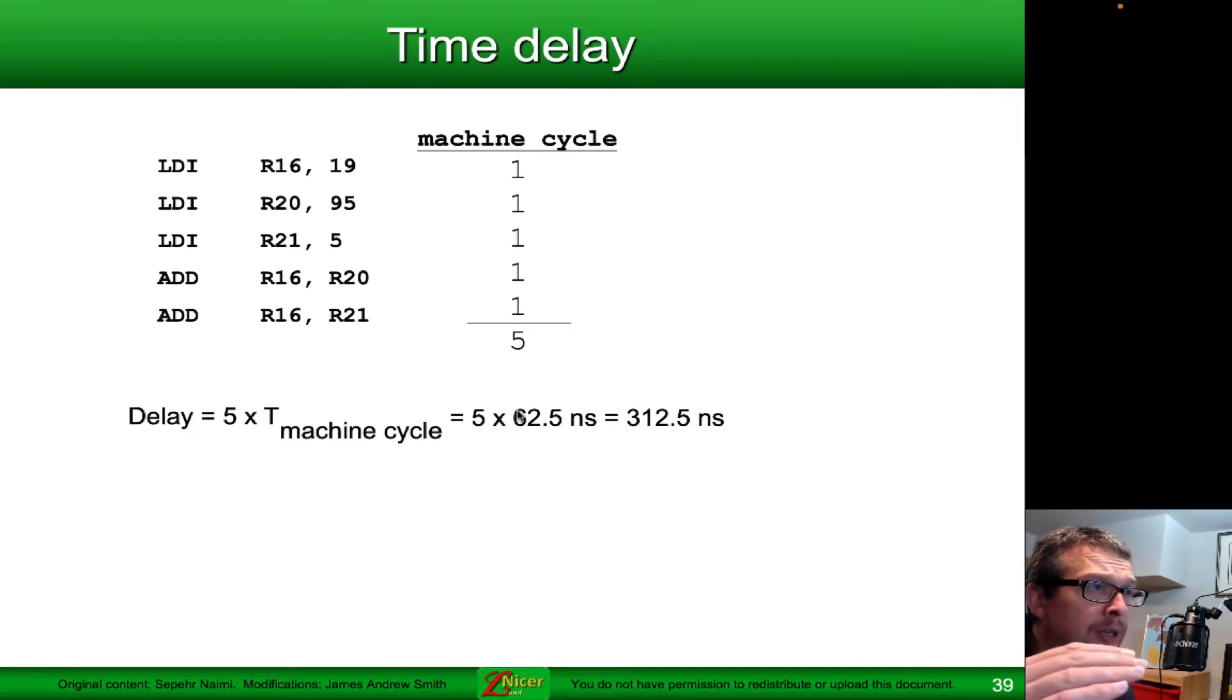So one iteration of 62.5 nanoseconds for LDI, one for LDI, one for LDI. That's three times 62.5. Then we have an add, which is also 62.5, and another add, which is 62.5. So it's five times 62.5 nanoseconds, which is 312.5 nanoseconds.